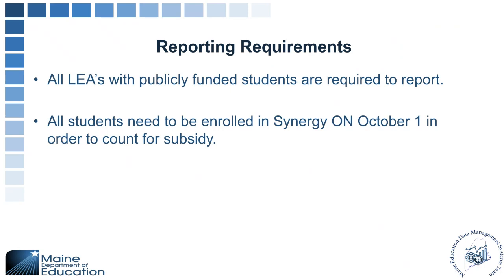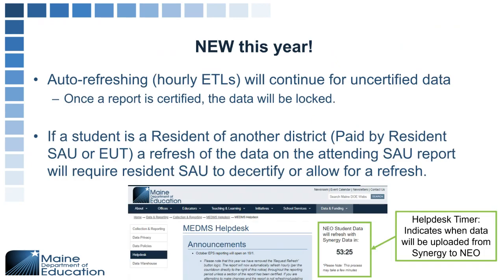In order to account for subsidy, we have a quick change for the October report this year: we have auto-refreshing for uncertified data. Once a report is certified the data is going to be locked, but until the report is certified, data will continue updating throughout the refresh time using the timer on the calendar or on the website. You do not need to request a refresh by clicking the refresh button.